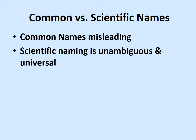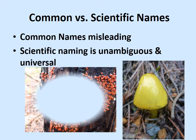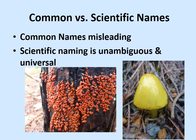Scientific naming is what we call unambiguous and universal because it involves Latin, which is a language that is not changing at this point.